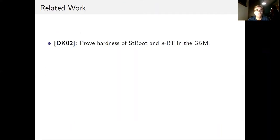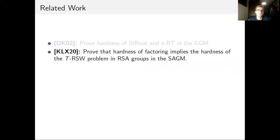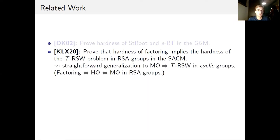In related work, Damgård and Koprowski proved in 2002 the hardness of the strong root and e-root problems in the generic group model. Lossing and Q showed in 2020 that the hardness of factoring implies hardness of repeated squaring in RSA groups in the strong algebraic group model — this is also where the strong algebraic group model was introduced. Their result straightforwardly generalizes to a reduction from the multiple order problem to repeated squaring for cyclic groups, which coincides with RSA results since factoring is equivalent to the hidden order problem for RSA groups.